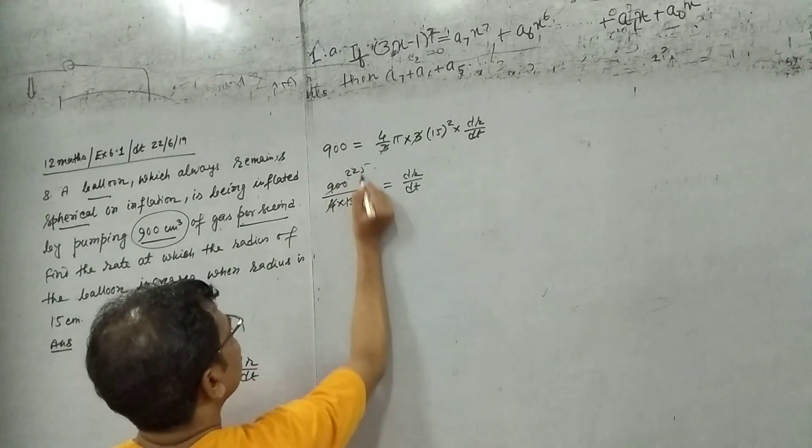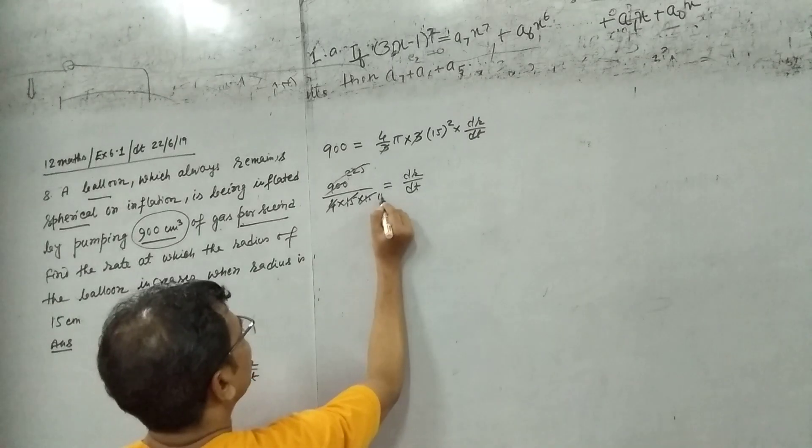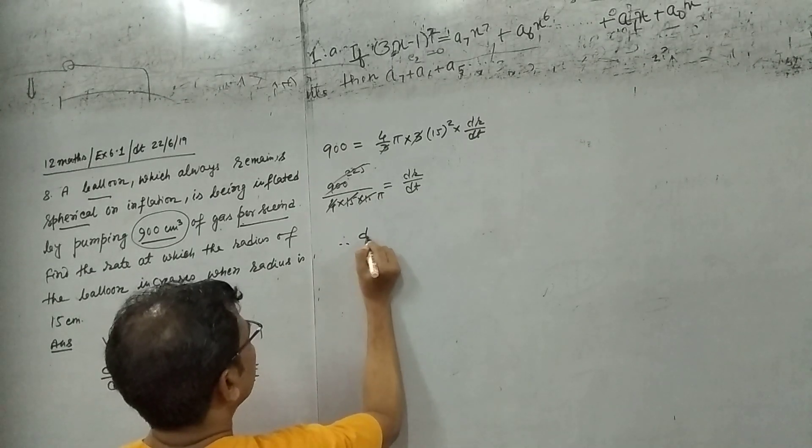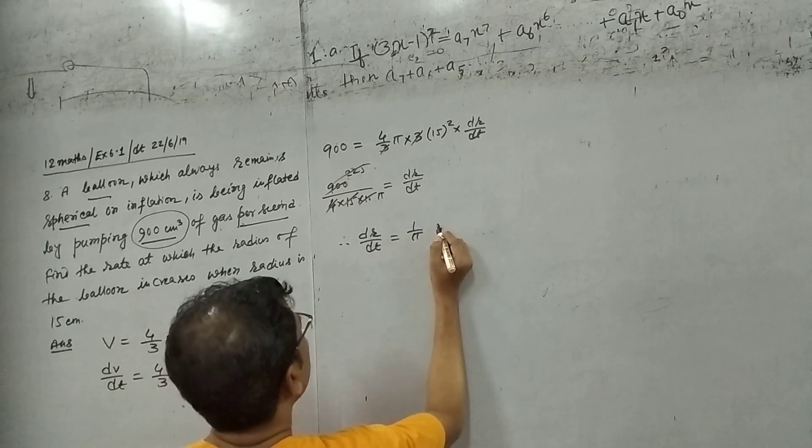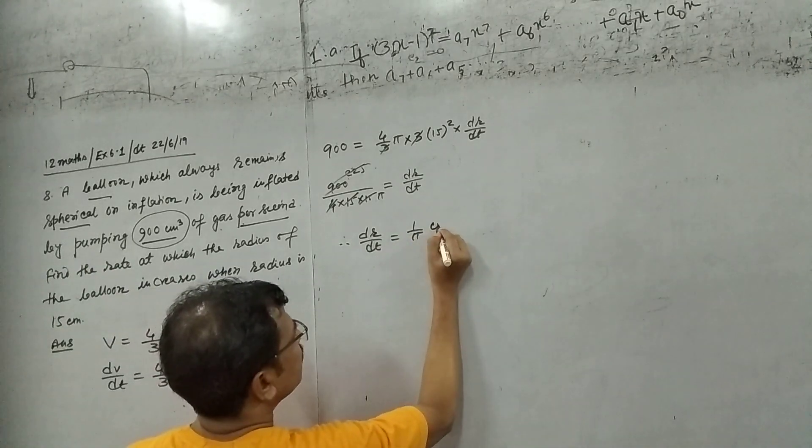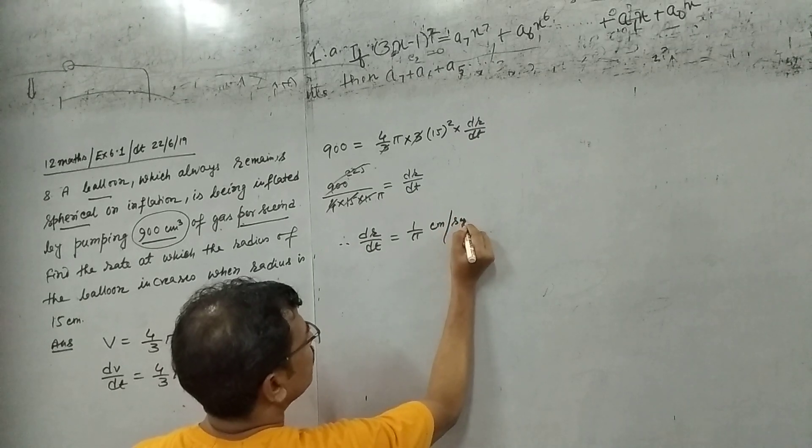We have 1 upon 25 pi, which is here. We have 1 upon 5 pi centimeter per second.